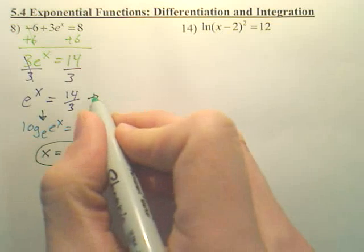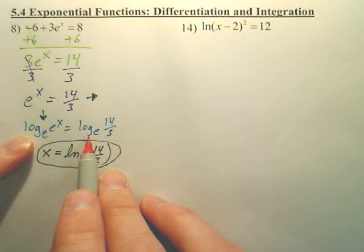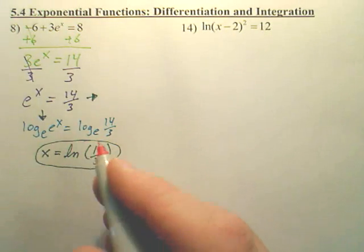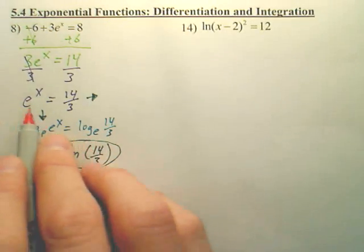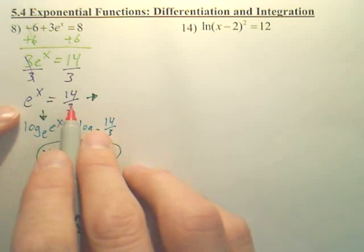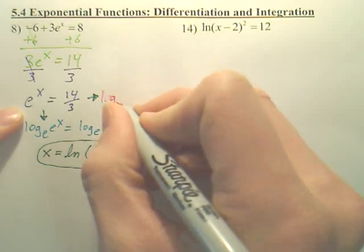Here's the other route, and I like this one better. For me, what I do, instead of logging both sides base e, because the base is e, which is ln. But what I like to do is, when I want to solve this, I like to just get rid of the exponent. To get rid of an exponent, you change it to a log. So I write the log in front.